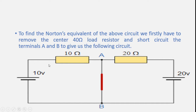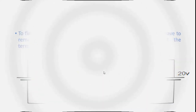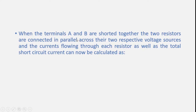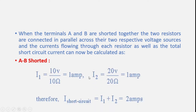We can calculate I1. It will be 10 divided by 10, which is 1 ampere. And 20 divided by 20 is also 1 ampere. So IS will be 1 plus 1 equals 2. When terminals A and B are shorted together, the two resistors are connected in parallel across their respective voltage sources. I1 is 10 by 10 equals 1 ampere, I2 is 20 by 20 equals 1 ampere. Therefore, the short circuit current IS equals I1 plus I2 equals 2 ampere.